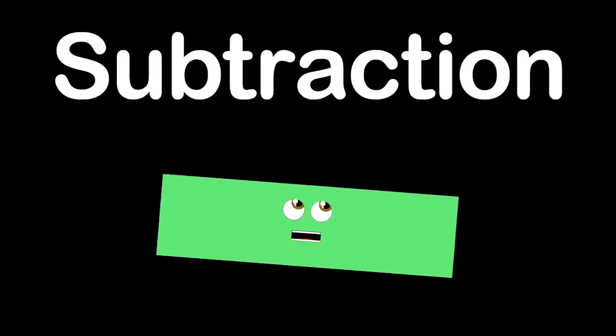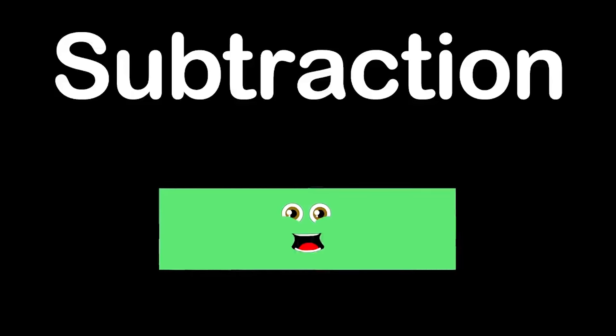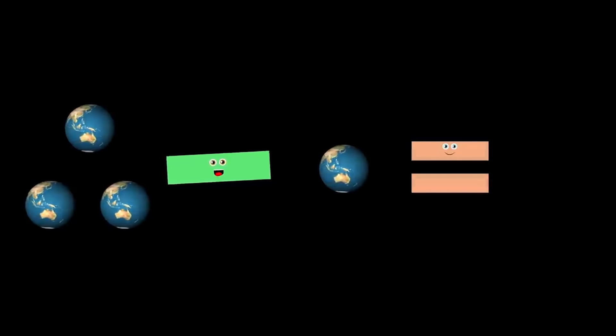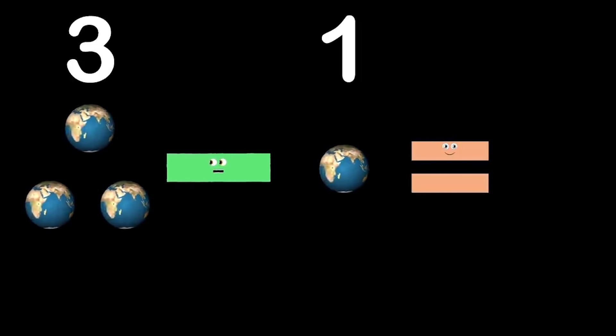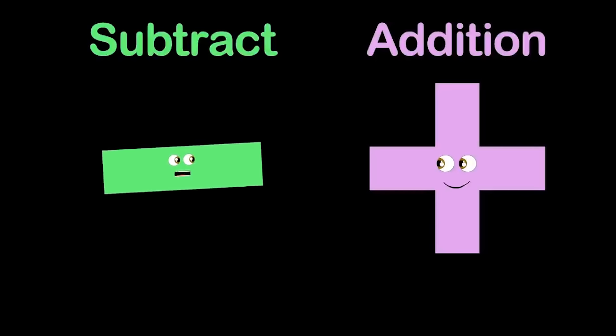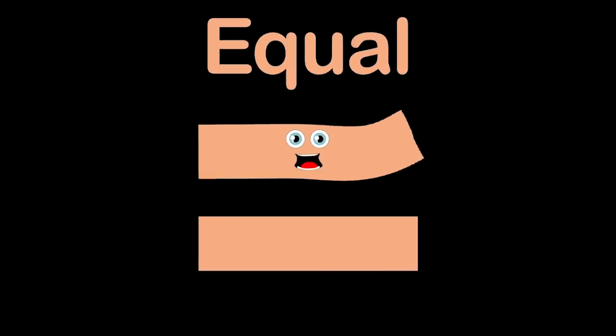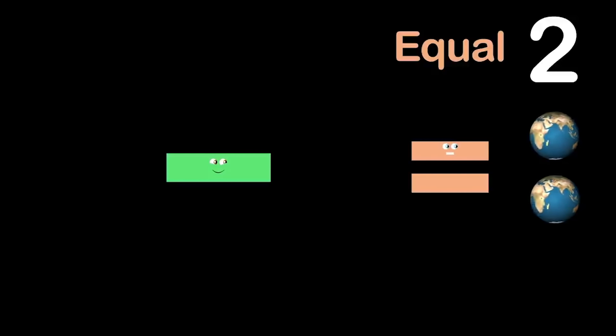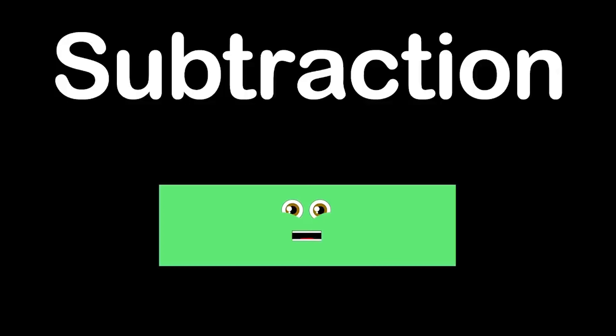I am subtraction, and this is my action. I take a number or an amount away from another with satisfaction. I'm subtraction, and I'll show you what I do. When you have a whole number, I decrease that number size — it's true. I'm a subtraction symbol, and this is how I look: a short horizontal line you'll find in any subtraction book. My job's to take away a particular quantity from an amount of anything in a math equation based on me. I'm opposite of the addition symbol, which is used to add. So when you have too much of something, just subtract — you'll feel glad.